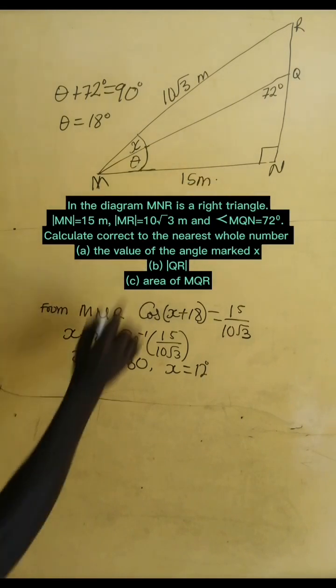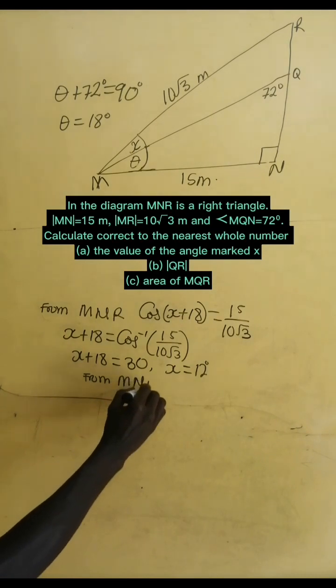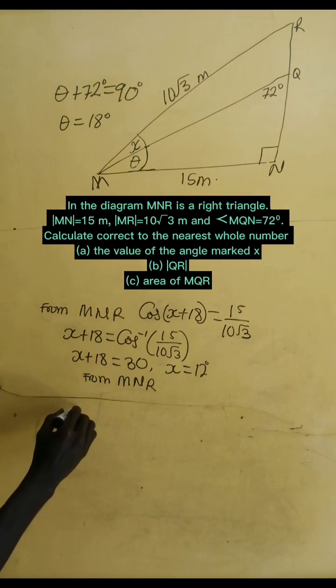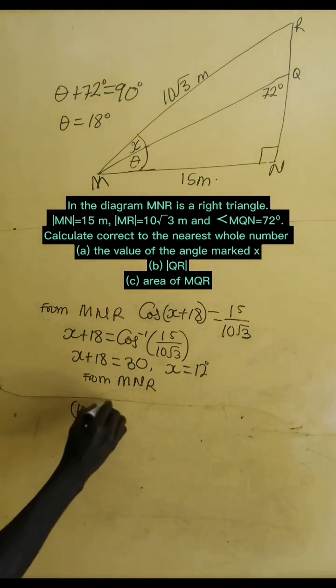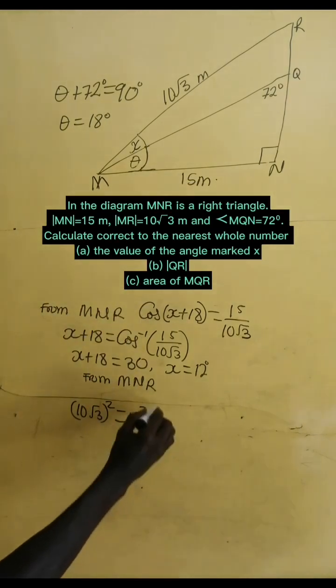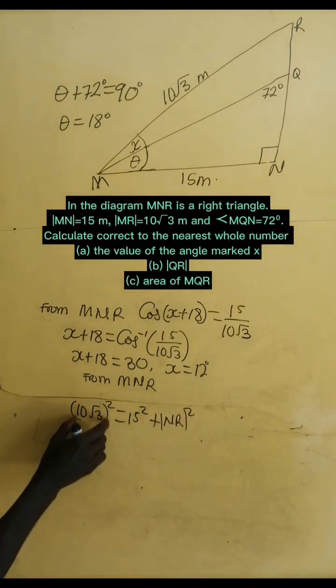How do we do the rest? From triangle MNR, that's the biggest triangle. If we take 10 root 3 and square, then it equals 15 squared plus NR squared. That is from Pythagorean theorem.